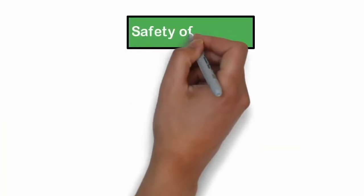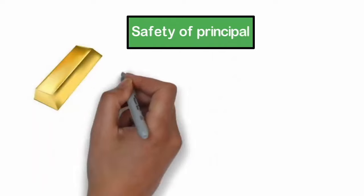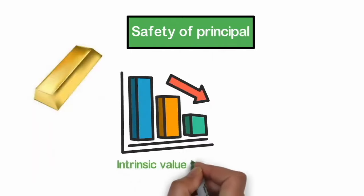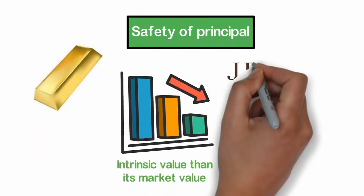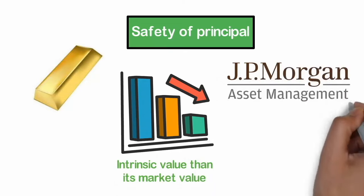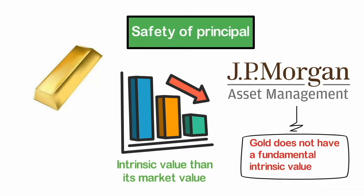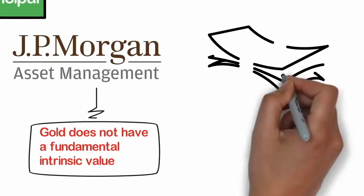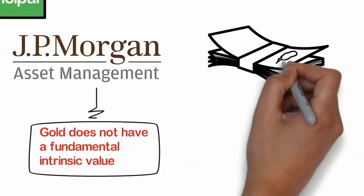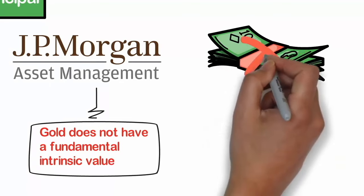Next, let's talk about the safety of principle. Gold has a considerably lower intrinsic value than its market value. According to J.P. Morgan Asset Management, gold does not have a fundamental intrinsic value. It is not tied to global consumption, doesn't provide cash flow or right to future earnings, and does not guarantee repayment later.